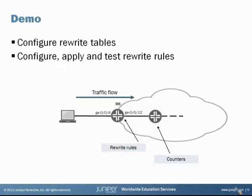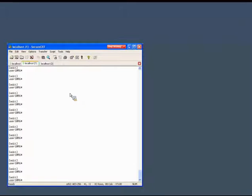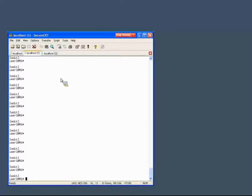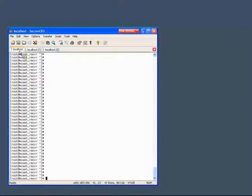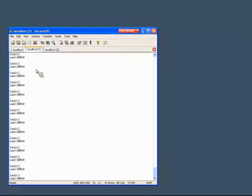Now let's see how this looks on real equipment. We have a host on the left side in our small lab network, sending traffic through the R6 router and down to a downstream device. We're going to apply a rewrite rule on our GE 0/0/12 egress interface on R6, and look at counters and show commands on the downstream router to verify the CoS bits are being assigned correctly. The first tab is our host, the next tab is R6 - the router that will do inbound classification and then remark traffic on egress.